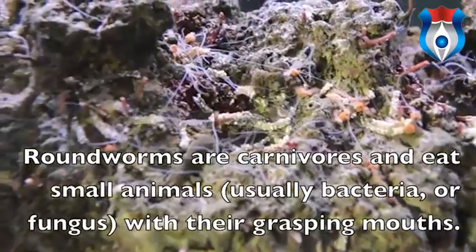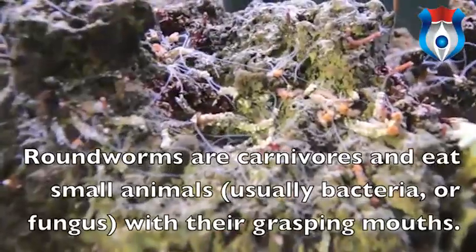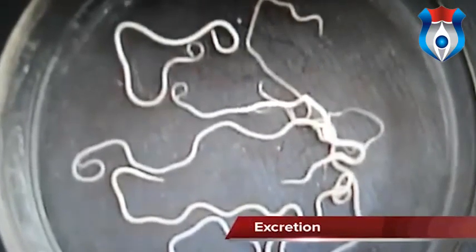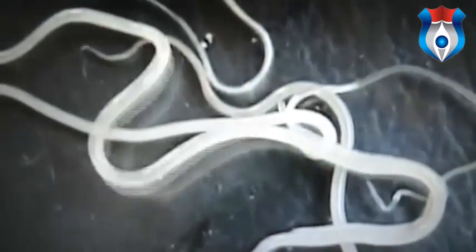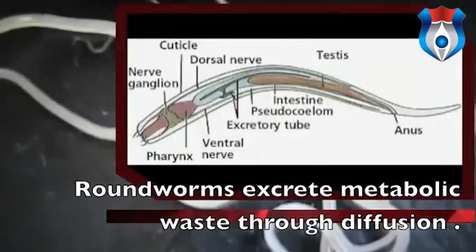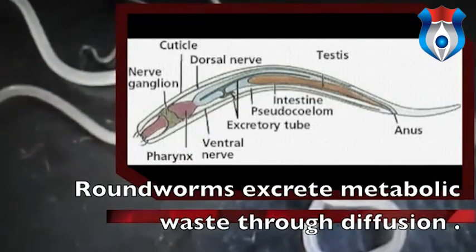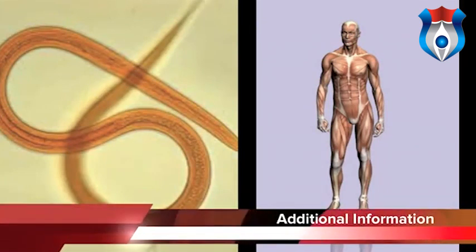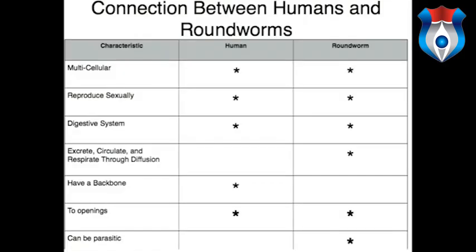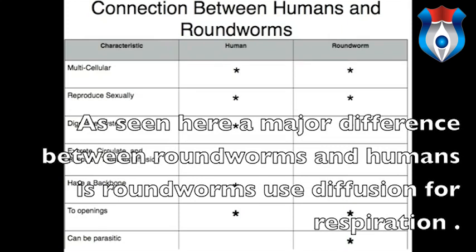Roundworms are carnivores that eat small animals using their grasping mouthparts. They exchange gases and excrete metabolic waste through their body walls via diffusion. A major difference between humans and roundworms is that roundworms use diffusion for respiration, circulation, and excretion.